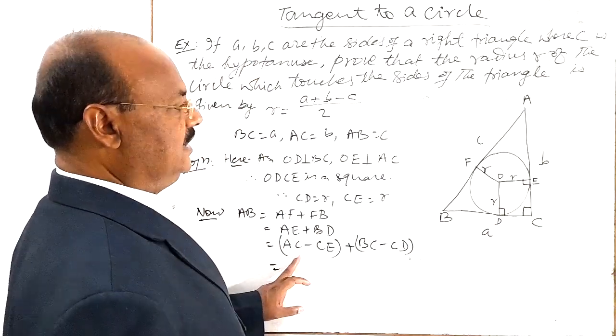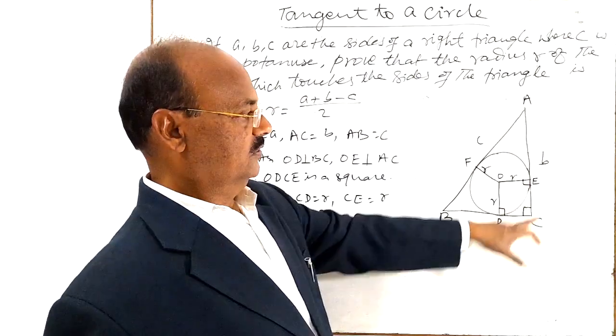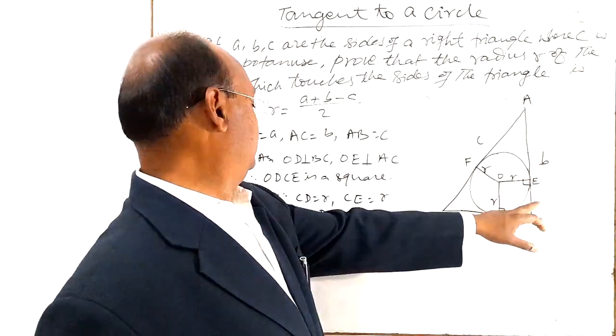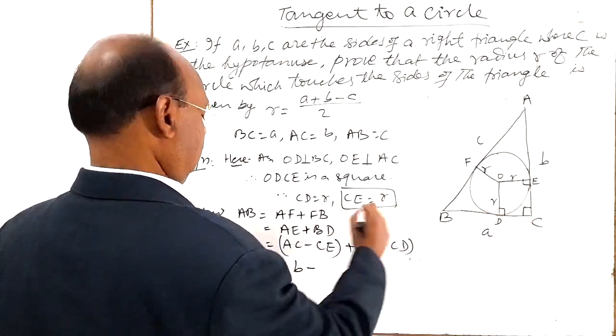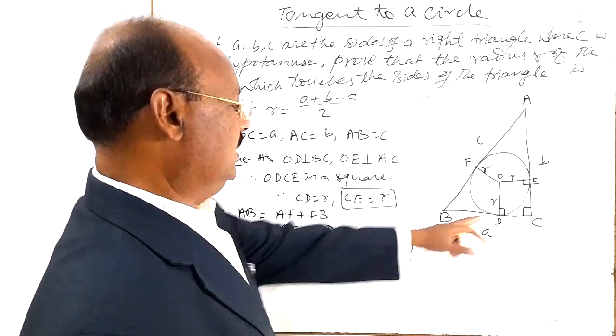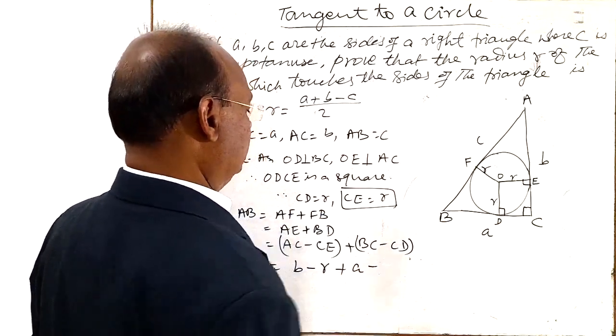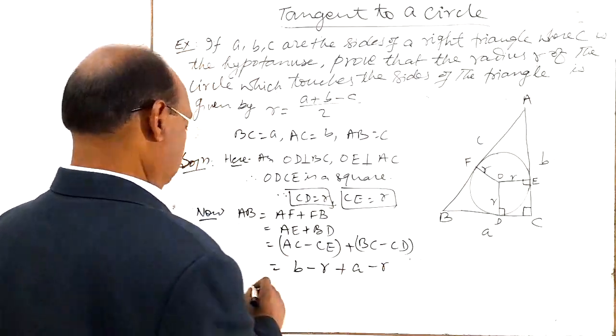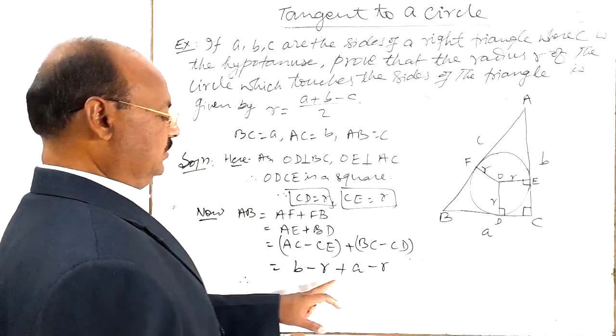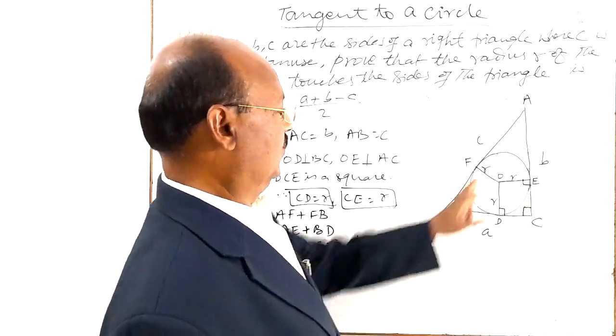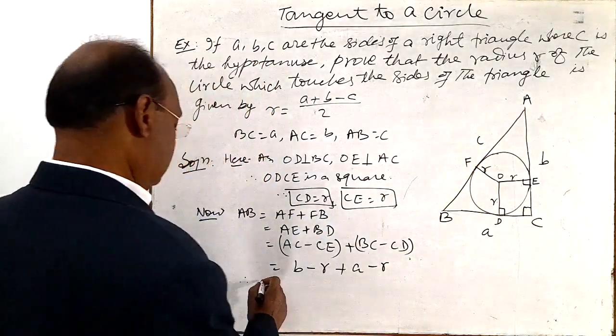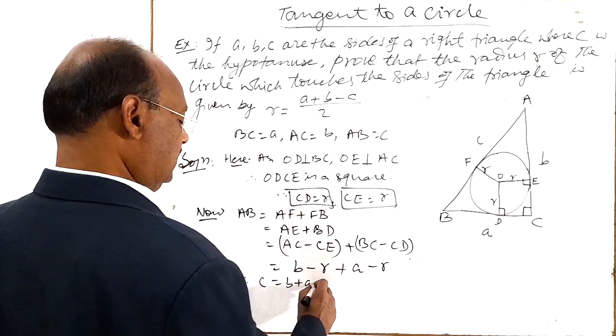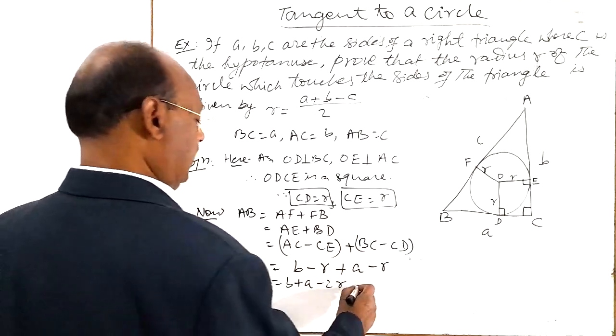And this AC is equal to how much? Side B. So this is B minus CE is equal to R. Minus R. Plus BC is equal to A. And minus CD is equal to R. So therefore, AB is equal to this much. And AB is equal to how much? AB means side C. So we can write side C is equal to B plus A minus 2R. And therefore 2R can be written as A plus B minus C.